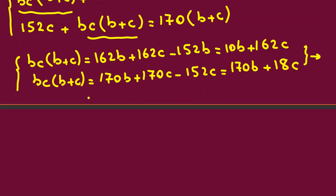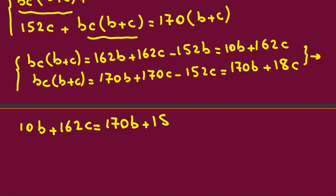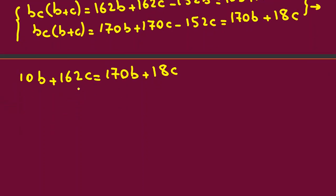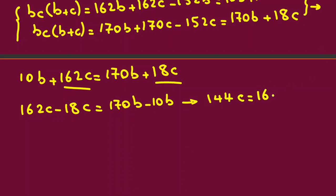Now if we say left hand sides are equal, by these two inequalities we can say left hand side, both of them bc(b+c), so right hand sides are also equal. So 10b plus 162c equal to 170b plus 18c. Now here I say, let's take c's to left hand side. 162c minus 18c equal to 170b minus 10b. And if we simplify, 162 minus 18 is 144c equal to 160b.